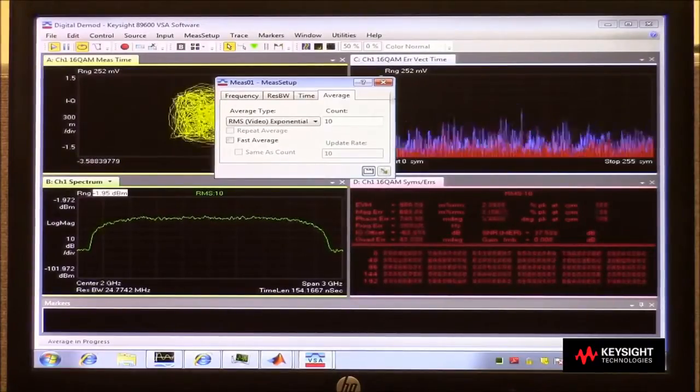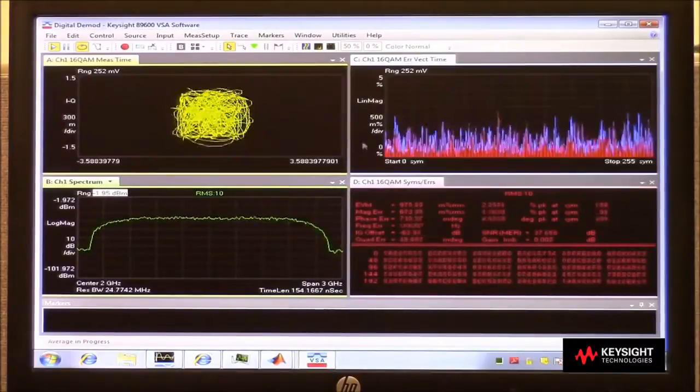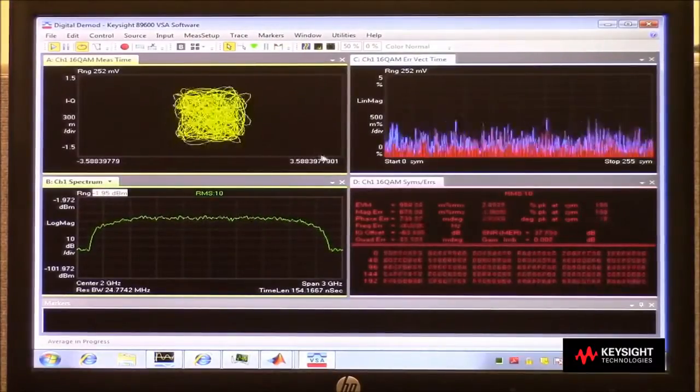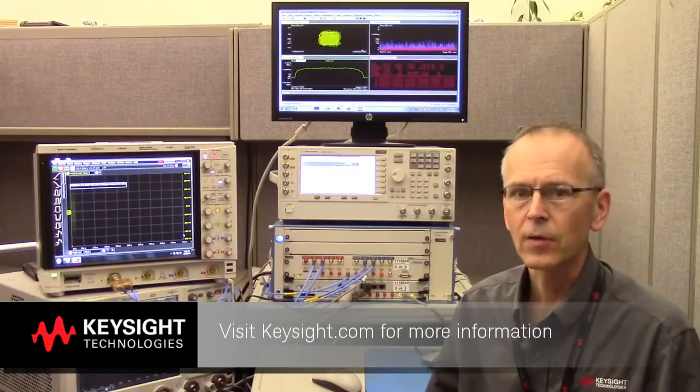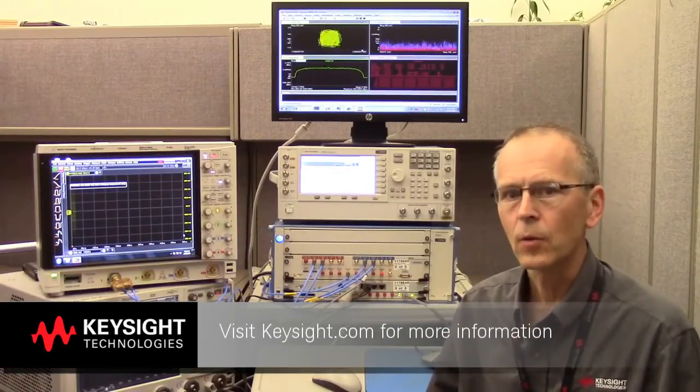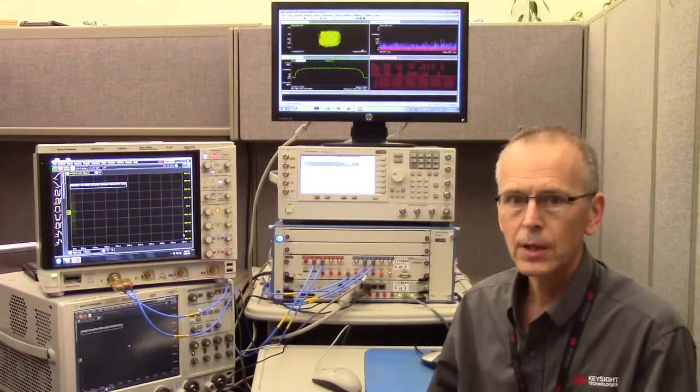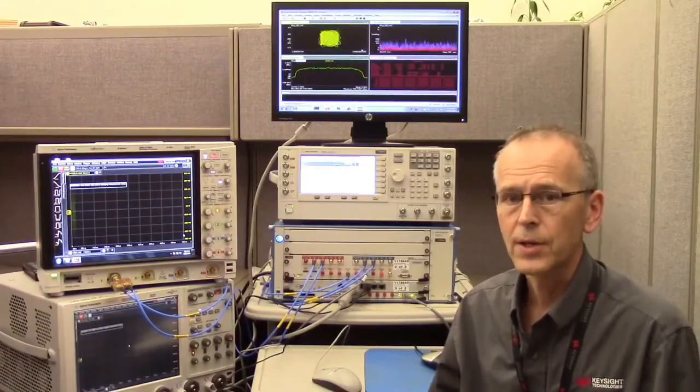So with the VSA software, we've been able to really evaluate the quality of this signal. We've seen how the S-series oscilloscope served as an excellent RF receiver, and the VSA software was able to take that scope data and process it into some very meaningful information by centering on that carrier frequency, selecting a span around where we had signal content, and then doing the vector signal processing.